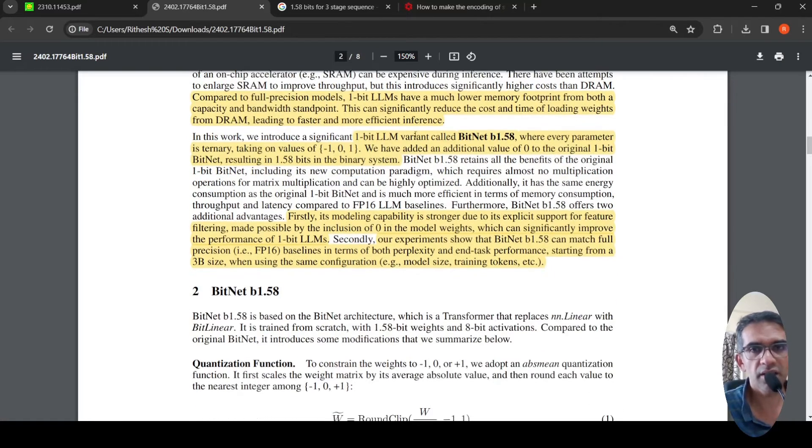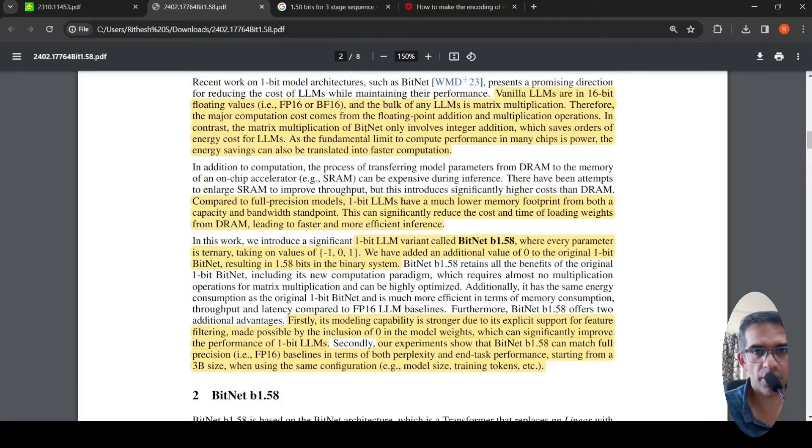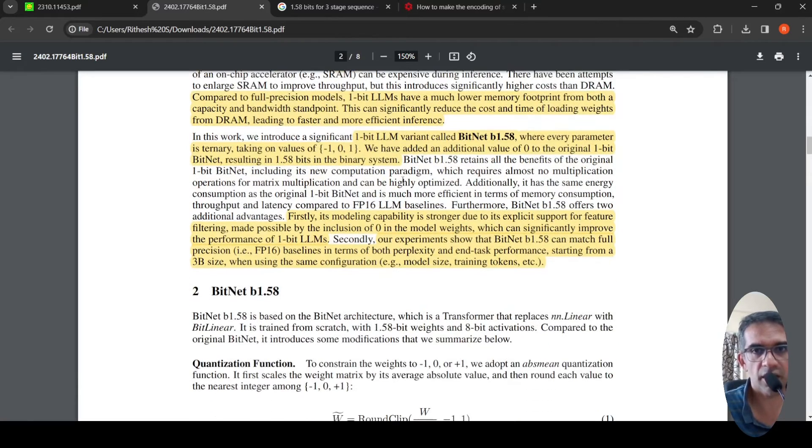So what they are saying is that this is the BitNet architecture, the benefits of BitNet architecture. So here they have introduced a variant called BitNet B1.58, where every parameter is ternary taking on values of minus one, zero or one, one of these three values. So they have added an additional value zero to the original one bit BitNet resulting in 1.58 bits in the binary system.